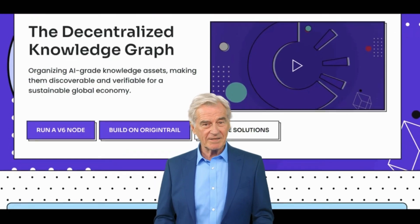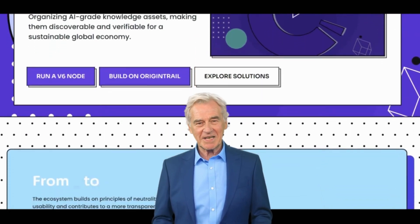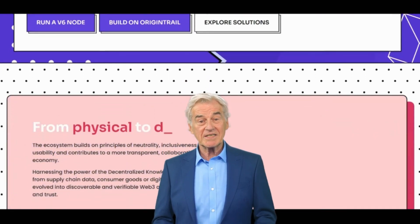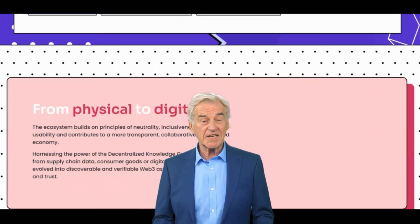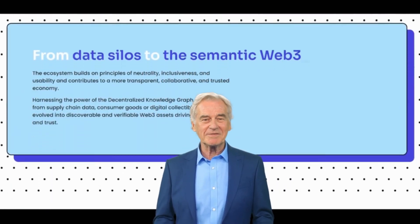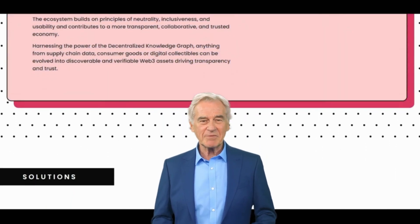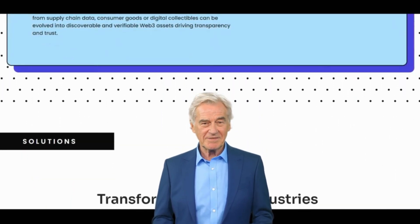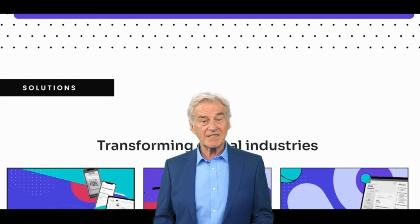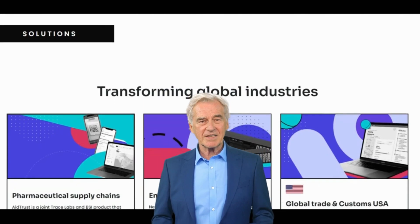OriginTrail TRAC — I'm George from KK Technologies. OriginTrail TRAC is a blockchain-based protocol designed for supply chain management. It was developed by OriginTrail, a Slovenian-based company founded in 2011. The protocol is built on top of the Ethereum blockchain and is designed to enable seamless data sharing among different supply chain stakeholders.